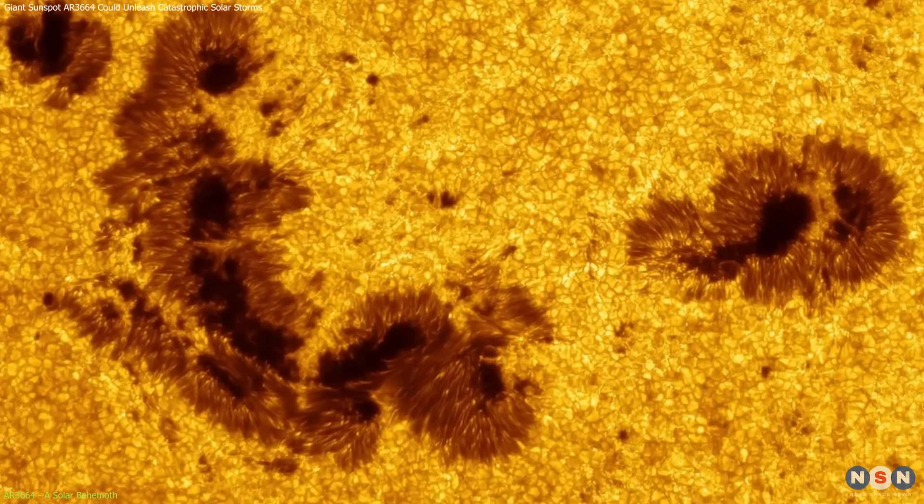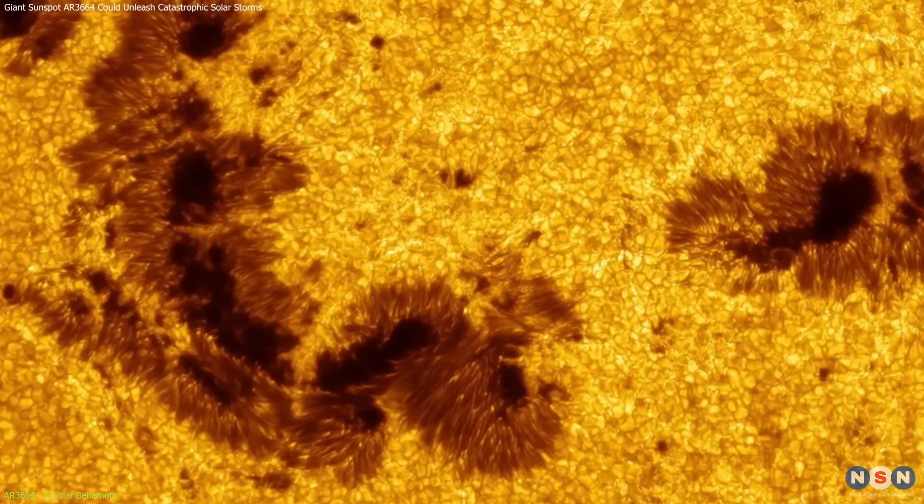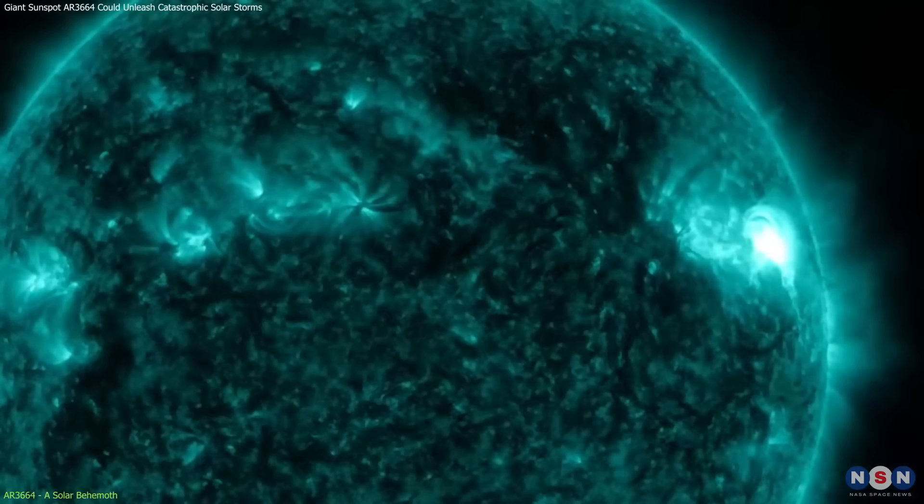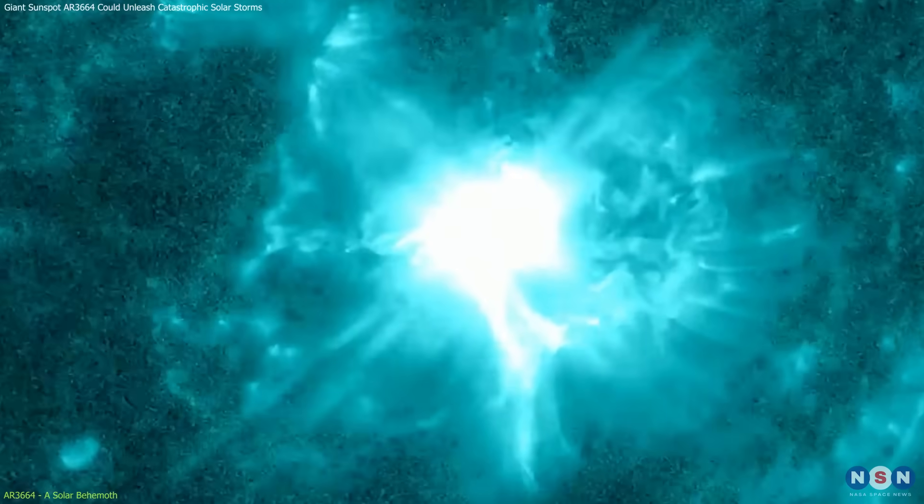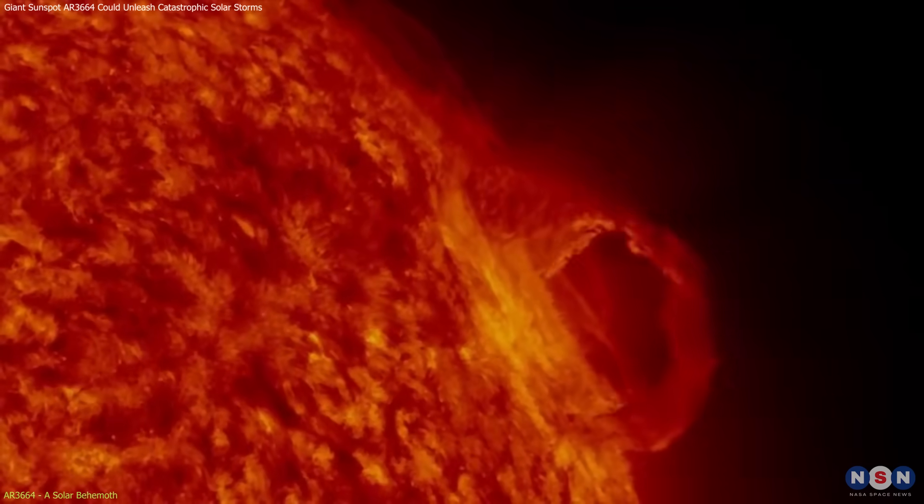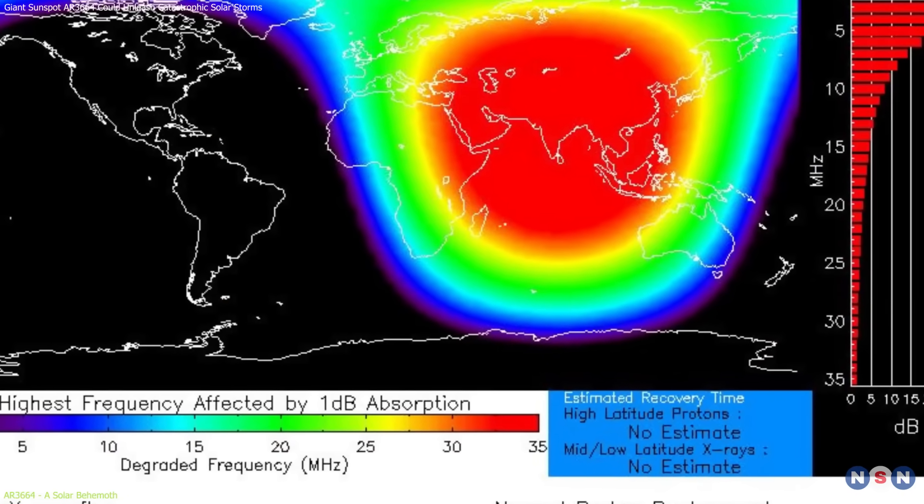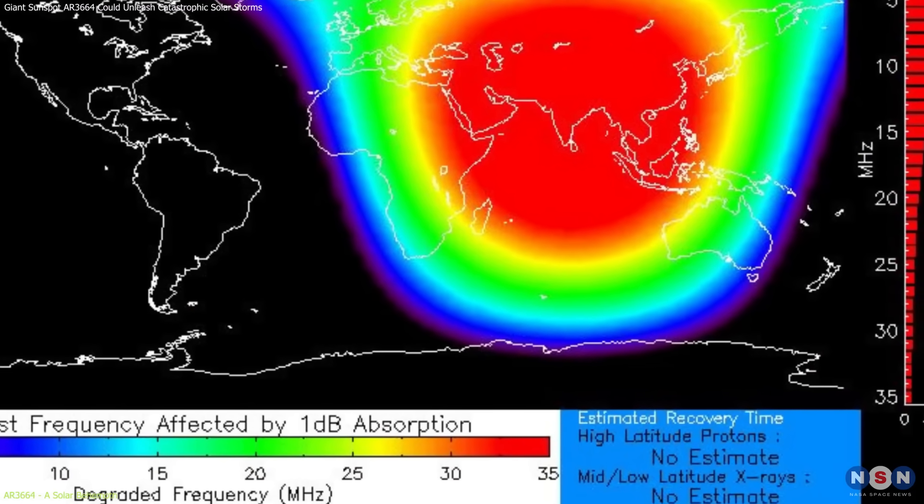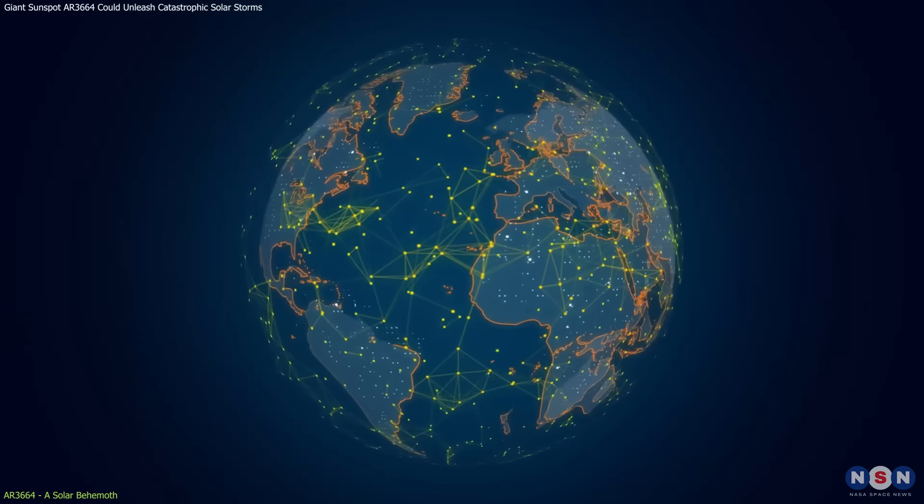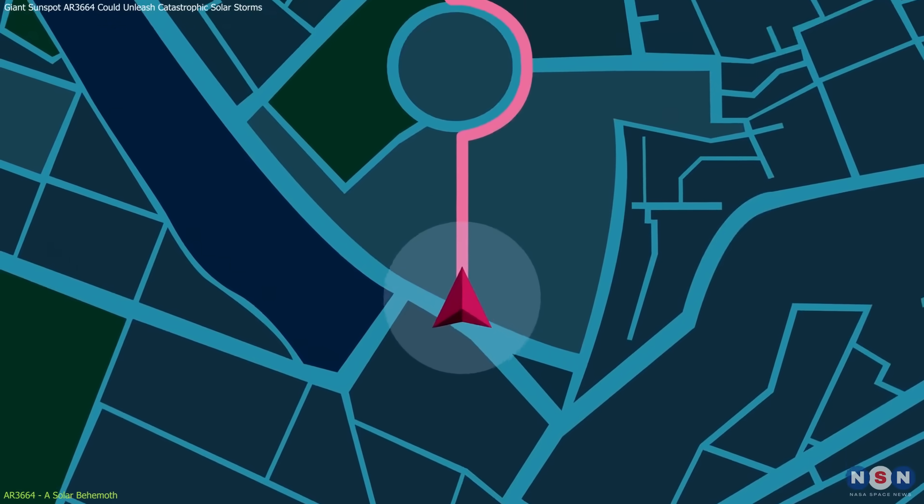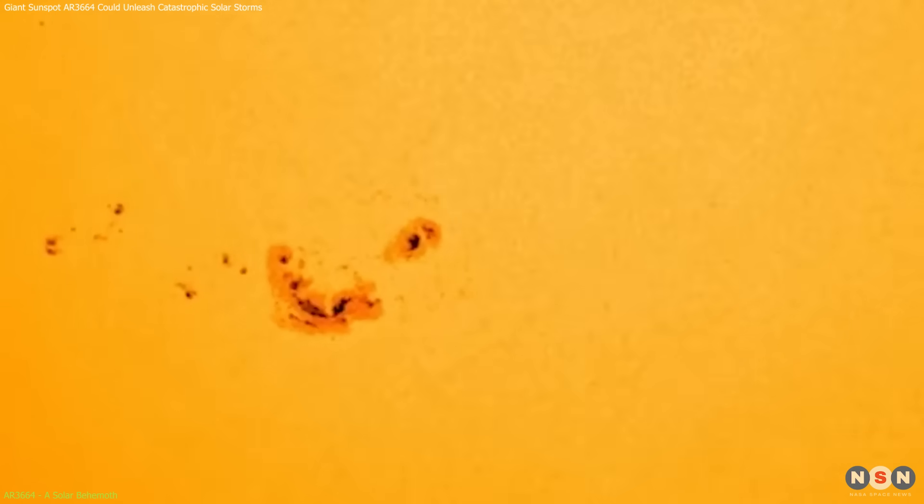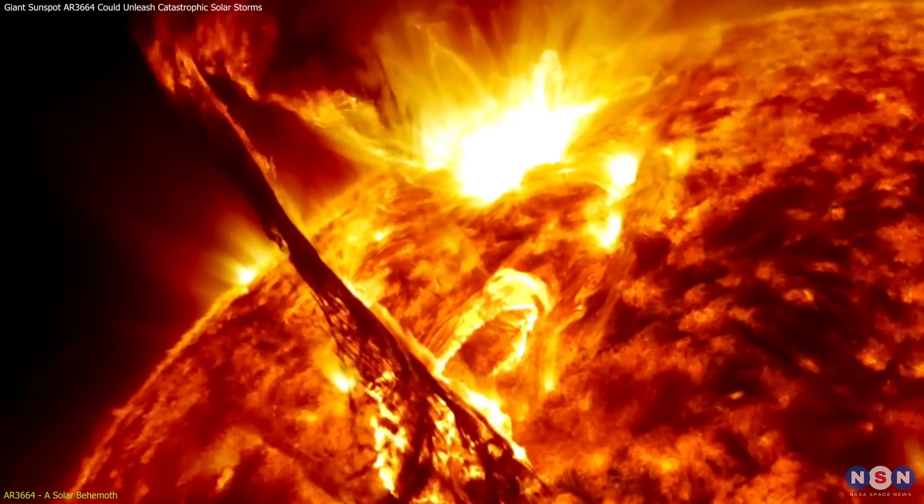AR3664 has been particularly prolific, producing multiple M-class and even X-class flares. These powerful eruptions send bursts of electromagnetic radiation across the solar system, which can be observed on Earth as sudden increases in radio static or disruptions in communication and navigation systems. This sunspot has also been associated with several coronal mass ejections.